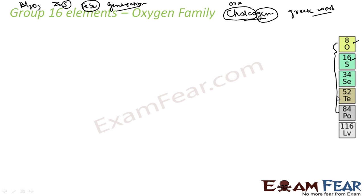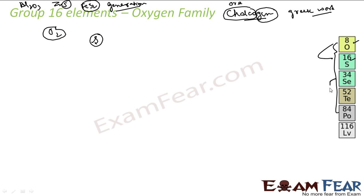Chalcogens are ore formers because they exist in most ores — Al2O3, zinc blende, FeS2. All these chalcogens play some important role in biological function, either as a nutrient or sometimes even as toxic. For example, oxygen is very good for our health. Sulfur is sometimes also good for our health. But selenium, tellurium, and polonium are actually harmful.